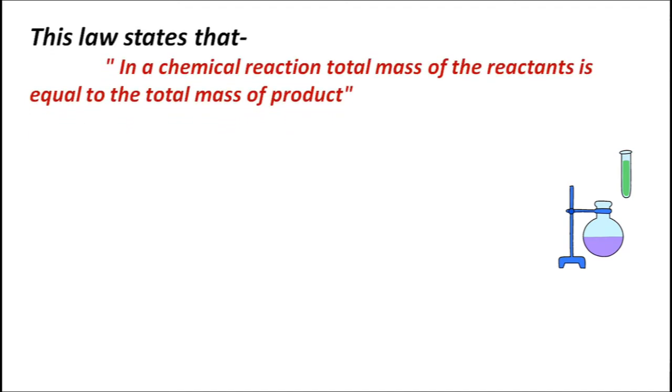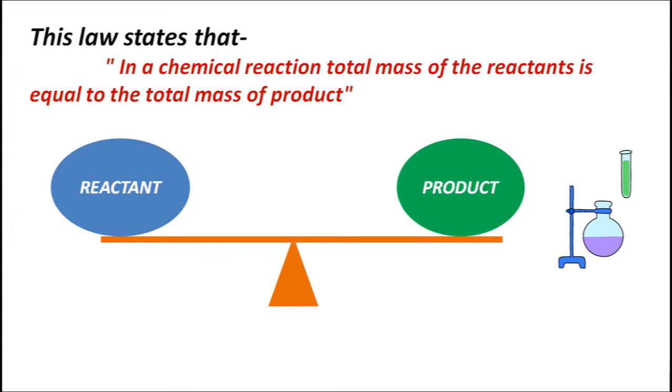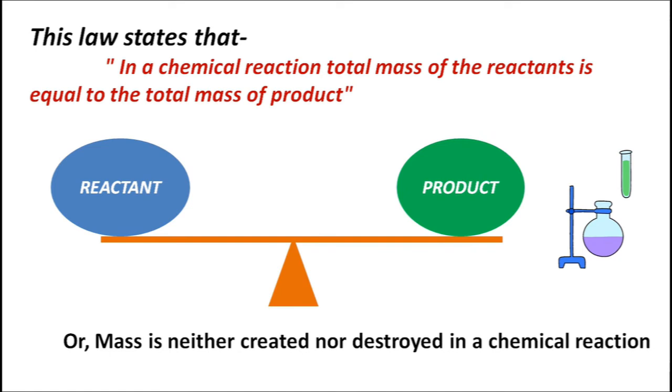This law states that in a chemical reaction, total mass of the reactants is equal to the total mass of products. Mass in a chemical reaction remains constant, or mass is neither created nor destroyed in a chemical reaction.